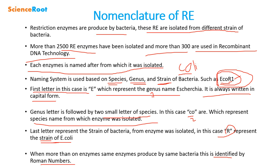So this is the nomenclature of restriction enzymes. To summarize: the first capital letter represents the genus, the next two small letters represent the species, the following letter represents the strain, and the Roman numeral represents the enzyme number. Thank you very much — if you like this video, please subscribe to our channel for more videos.